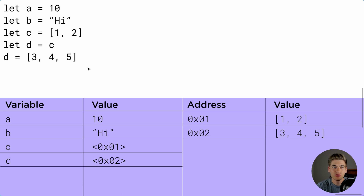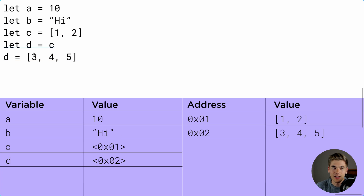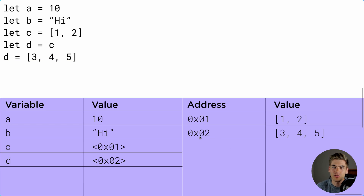Now let's go one step further and actually set d to a brand new variable — the array [3, 4, 5]. This new array is somewhere in memory, let's say address 0x02, which is going to have the value [3, 4, 5]. C up here is still going to reference 0x01, but now d is referencing 0x02. That very first rule still applies: JavaScript takes the value of whatever's on the right-hand side. Since the new array has memory address 0x02, we take that value and set it to d, overriding d's value. Since we're overriding the value stored in d, we're not actually changing anything to do with c. Now if we update d or update c, it's not going to affect each other — they're completely different values at this point.